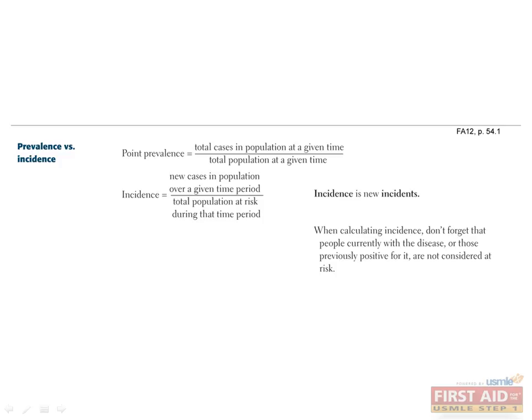Thus, incidence describes new cases while prevalence describes old and new cases. Also, when calculating incidence, people who are not at risk for acquiring the disease are omitted. This includes people currently with the disease as well as people previously with the disease for conditions that cannot be acquired multiple times.